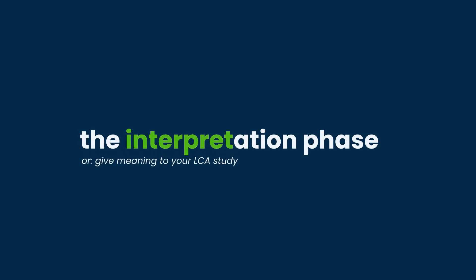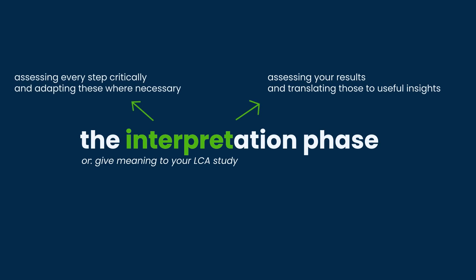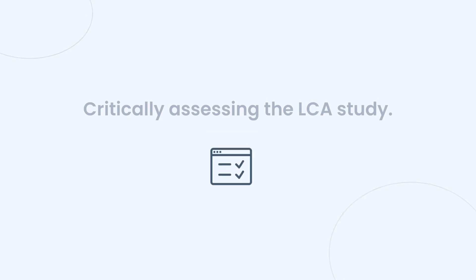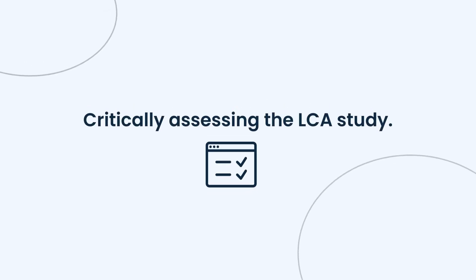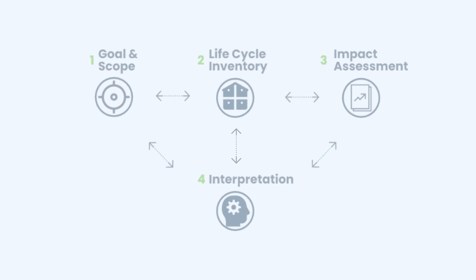This essentially consists of two things: assessing the results of your study and translating those to useful insights, but also assessing every step in the study critically and adapting these where necessary. Together with the goal and scope phase, the interpretation phase gives your study direction and guidance.